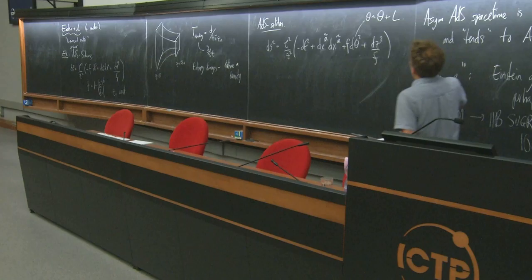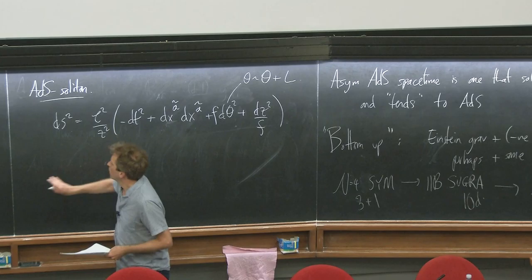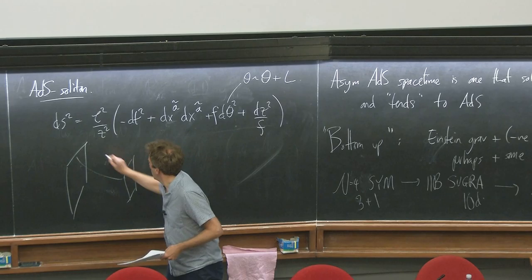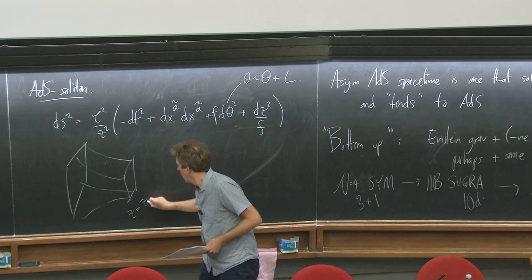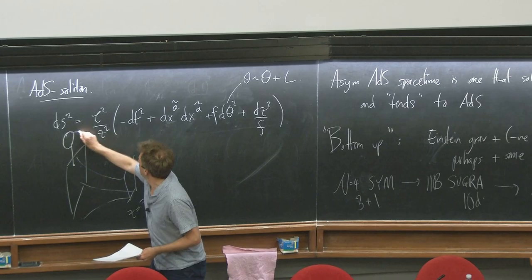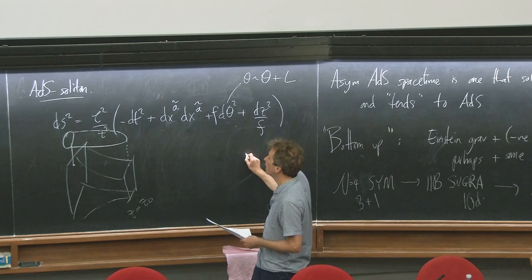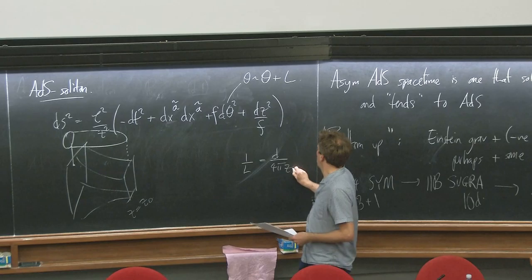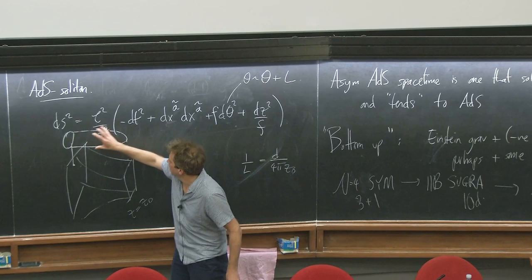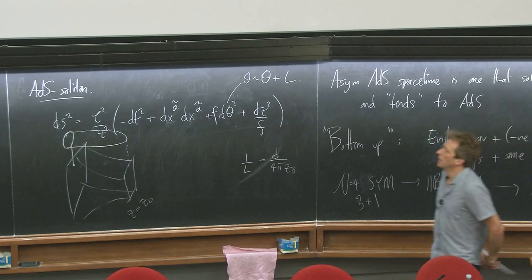In that setting, there's another nice solution closely related to this one: the AdS soliton, discovered by Horowitz and Myers. You take the metric and make one coordinate — theta — a circle coordinate. This isn't a black hole at all — there's no horizon. Instead, the circle on the boundary shrinks smoothly as you go away from the boundary in the radial (Z) direction, provided you pick Z₀ appropriately. So it's a smooth shrinking of the circle as you move into the bulk.